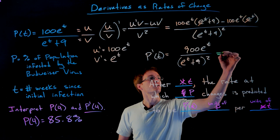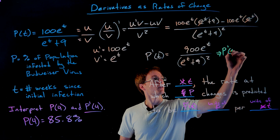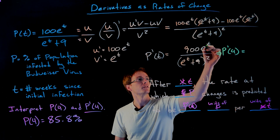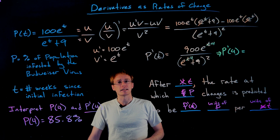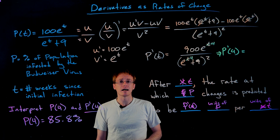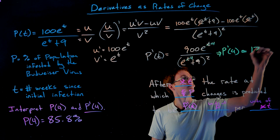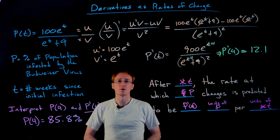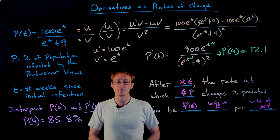Now we just plug 4 in for t in our first derivative function — replacing all the t's with 4. We definitely need a calculator to evaluate that, but doing so gives us approximately 12.1. That is the value of our first derivative p prime of 4.